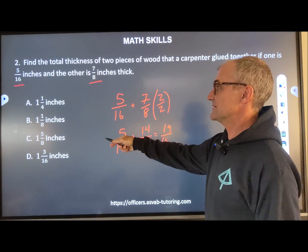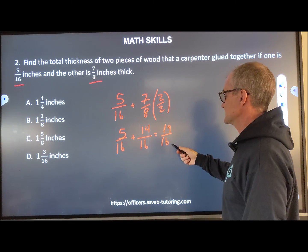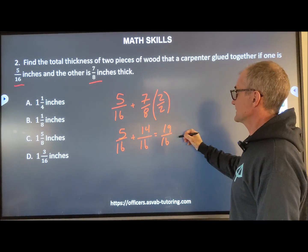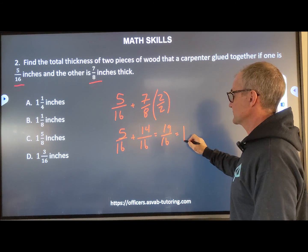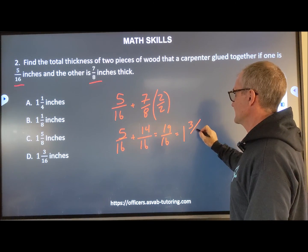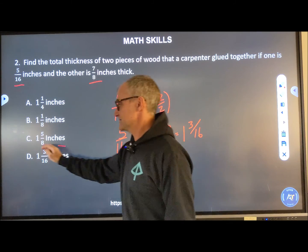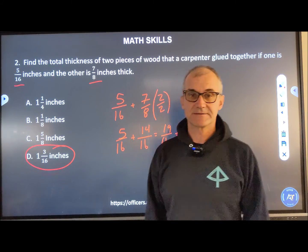That answer isn't a simple fraction, so I have to turn it into a mixed number. 16 goes into 19 one time with three left over, so it's 1 and 3/16. I see that's answer D.